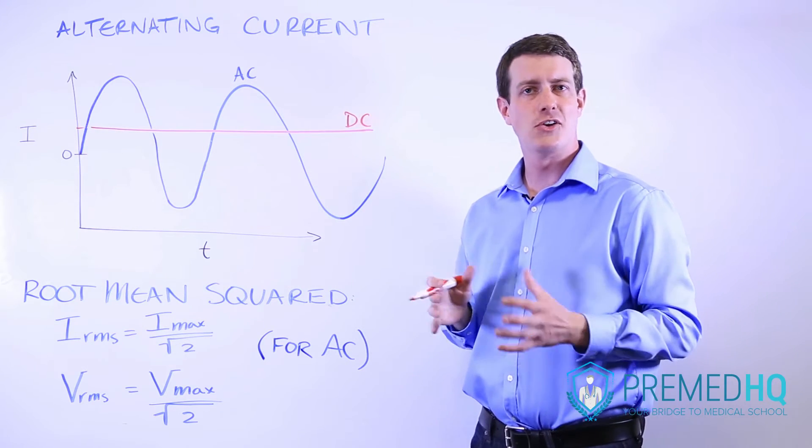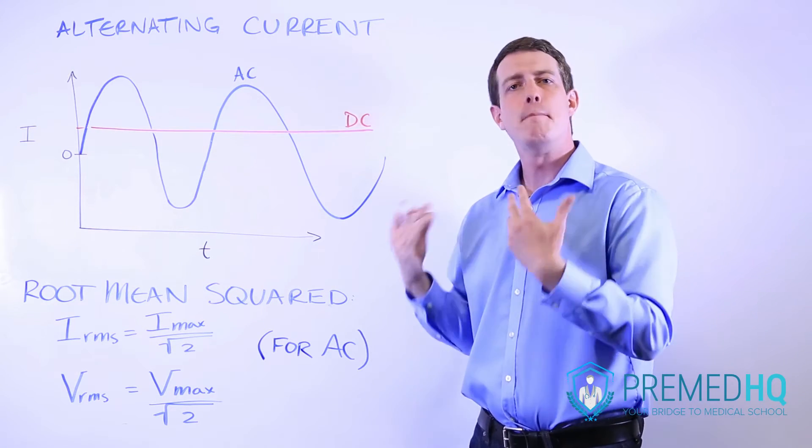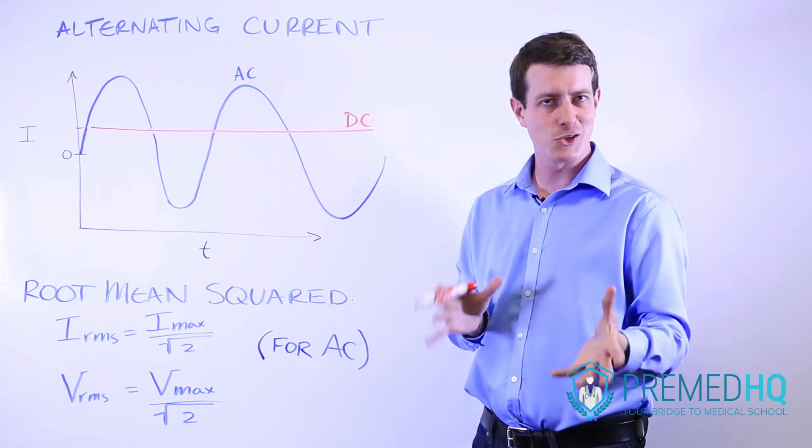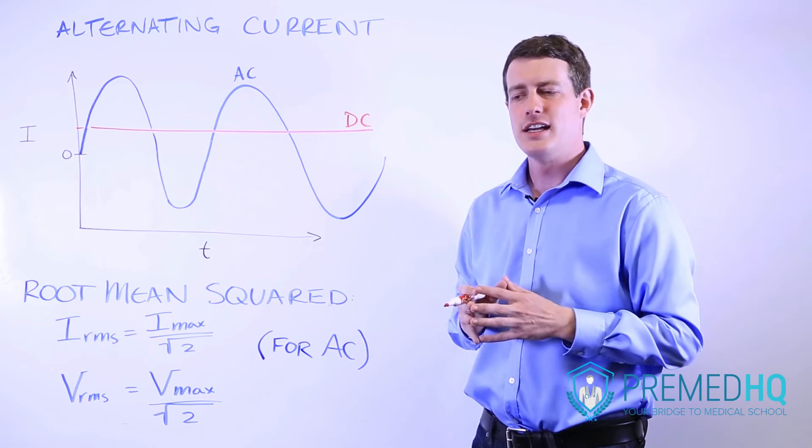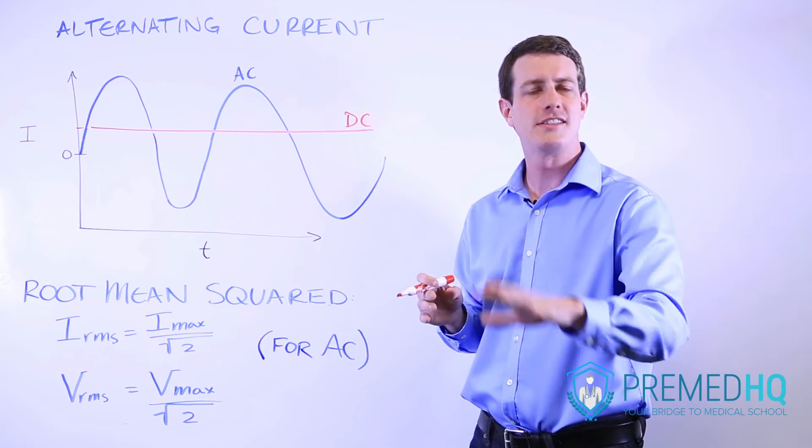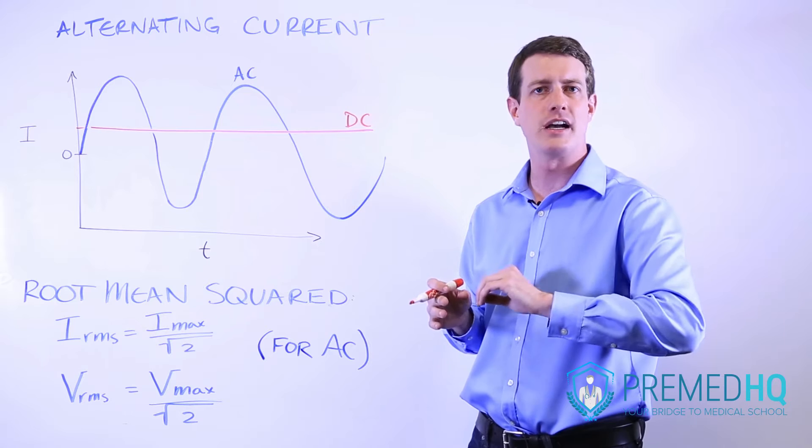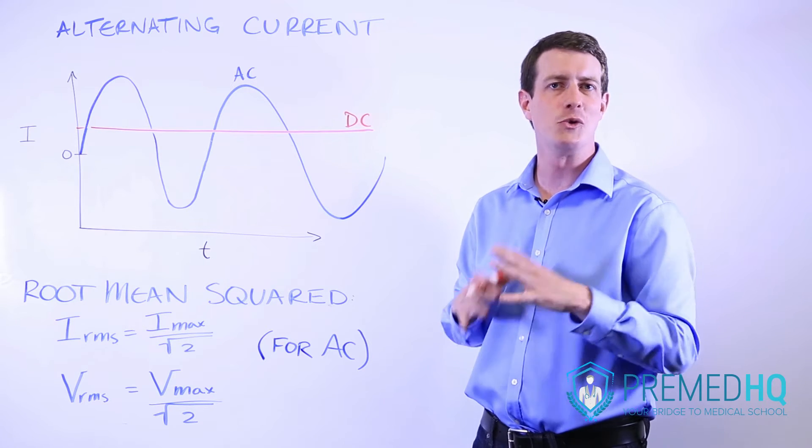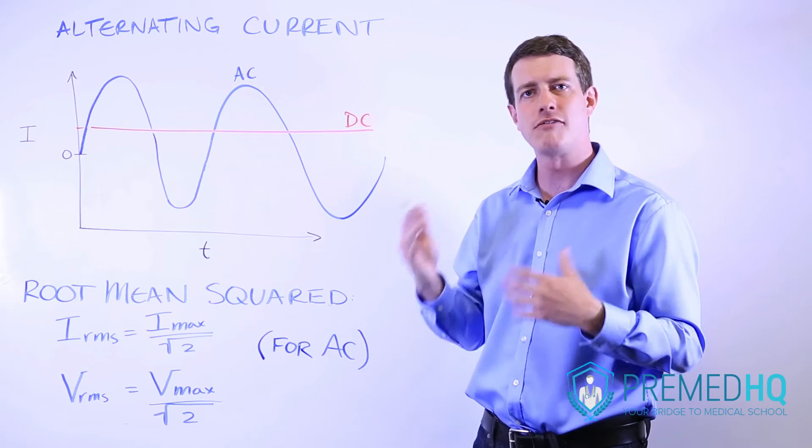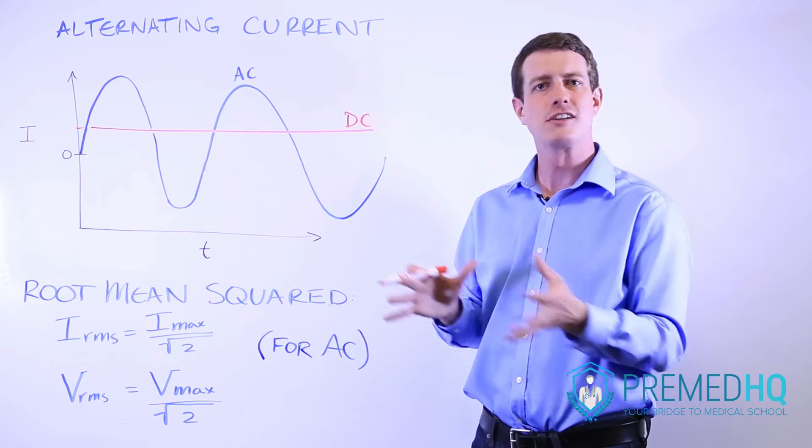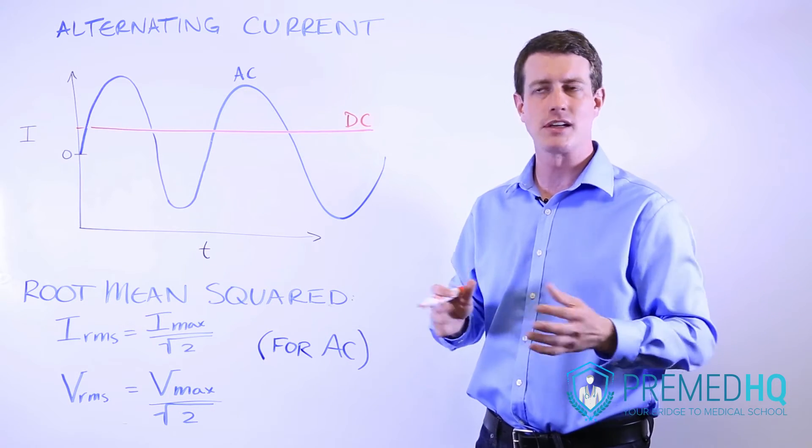Places you see direct current often involve batteries providing power to a circuit or something like that. Whereas alternating current is something that you might see with the current and electricity that is supplied to a house or to an office building. Alternating current is often what people are thinking of when they're considering the electric company.